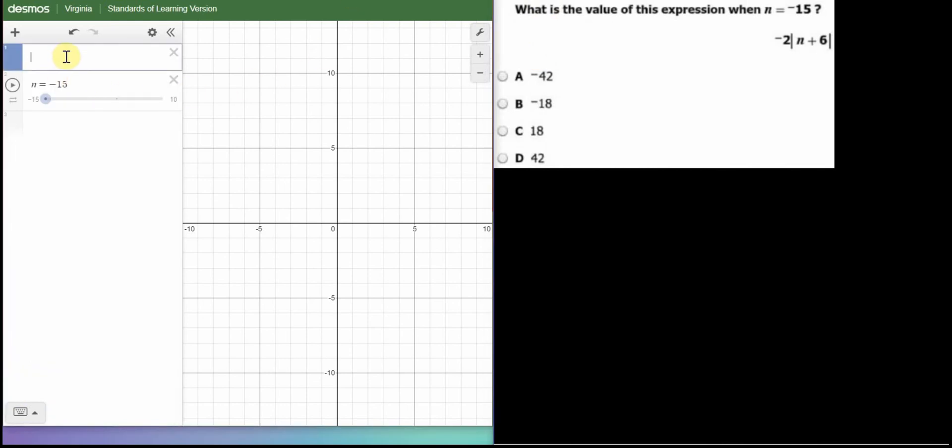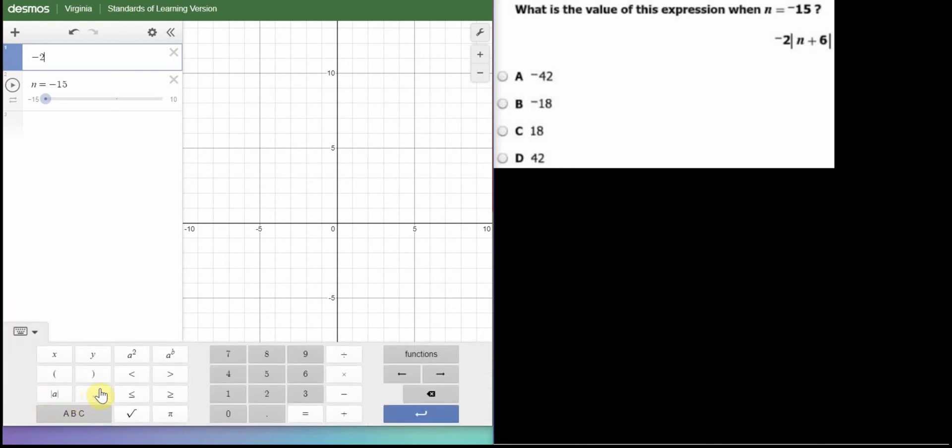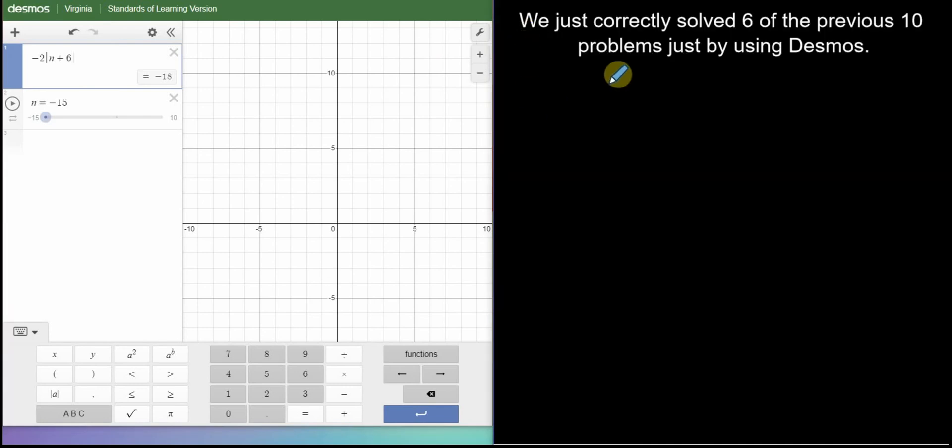Last one, I believe. I didn't put in the expression because I wanted you guys to see how to get absolute value. So, we're going to put in negative 2, open the keyboard, absolute value, and I'm going to put in N plus 6. I already told it what N was, negative 15. So, it puts negative 15, and it gives me negative 18. And, we have our answer. And, you can see, not counting the review ones, 6 of the 10 questions we solved strictly using Desmos.